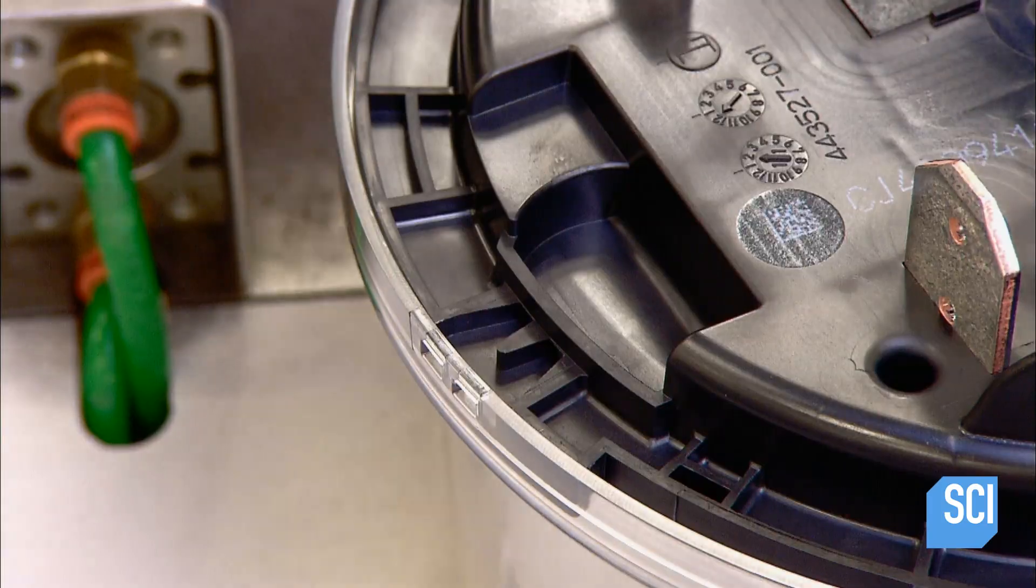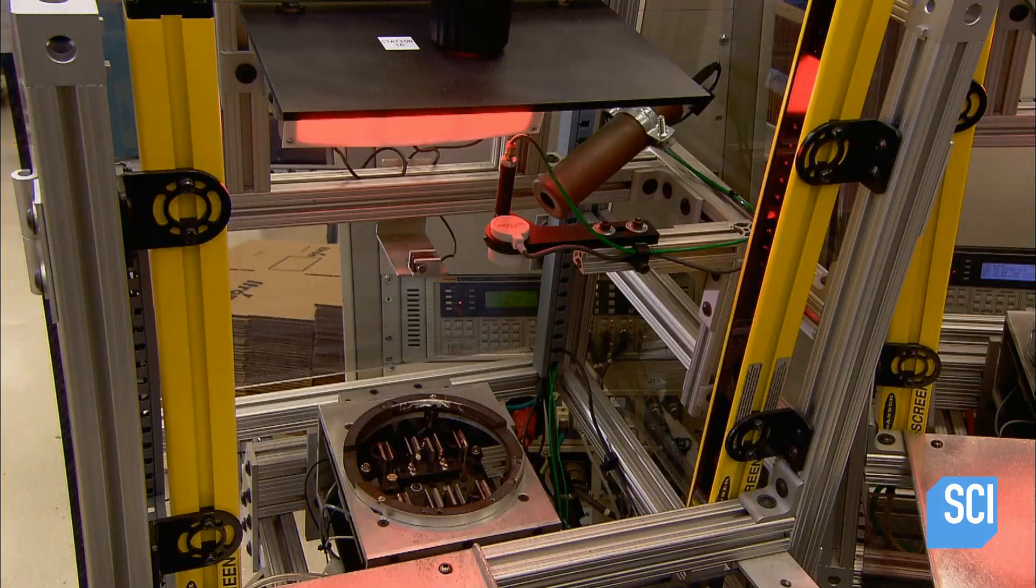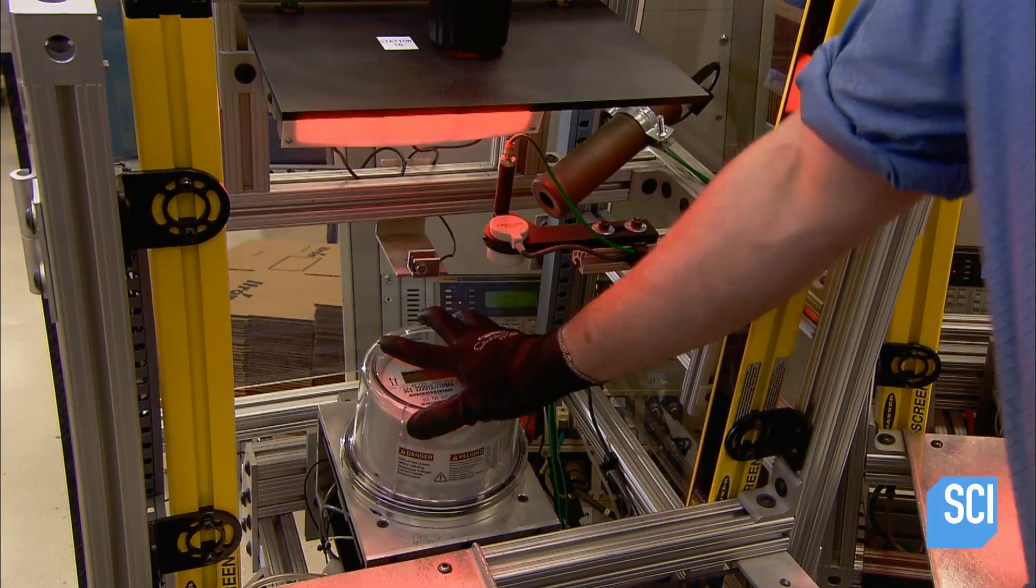Once workers have fully assembled the housing, they install a metal tamper evidence seal. Every meter undergoes rigorous final testing.